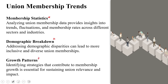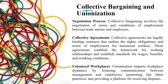Identifying growth patterns — strategies that contribute to membership growth — is essential for sustaining union relevance and impact. In that background, collective bargaining and unionization happen with respect to three aspects: the negotiation process, collective agreements, and unionized workplaces.